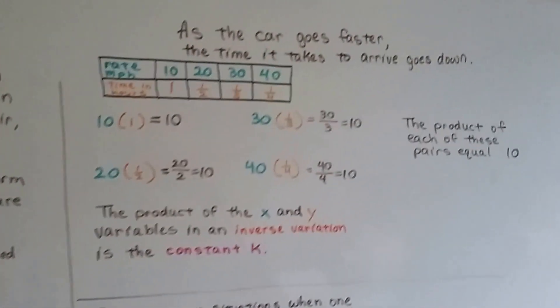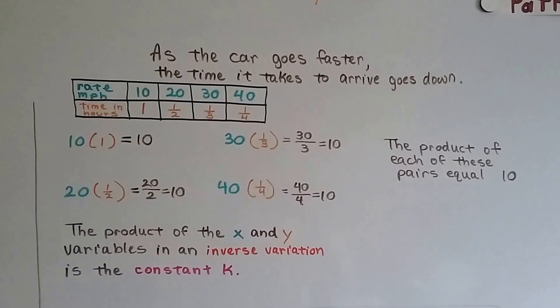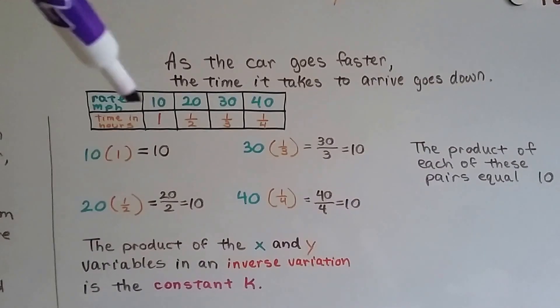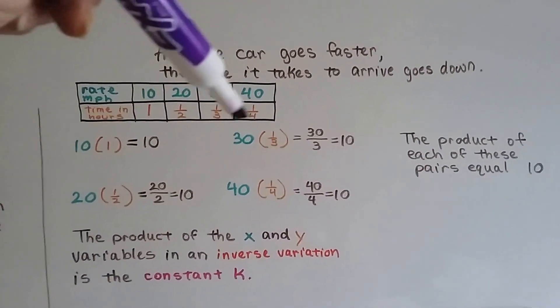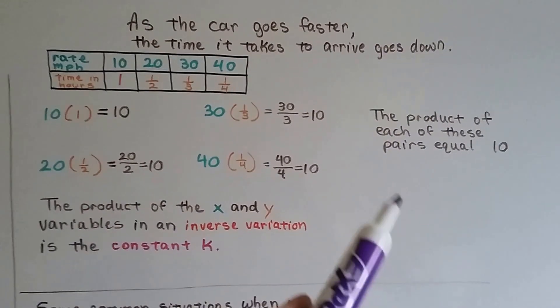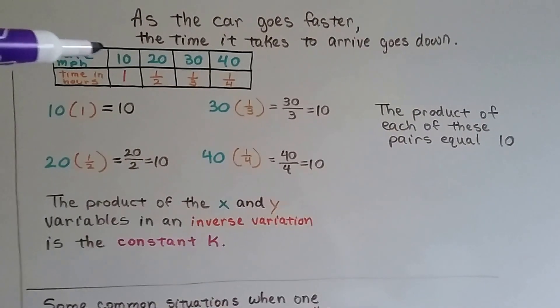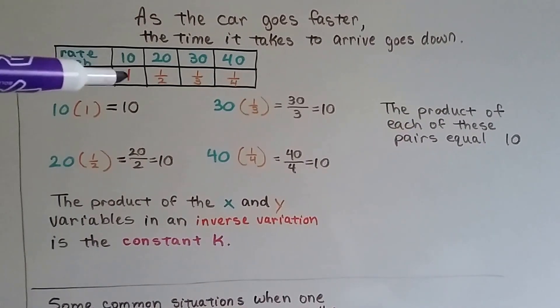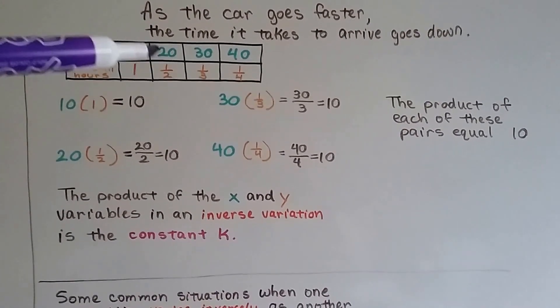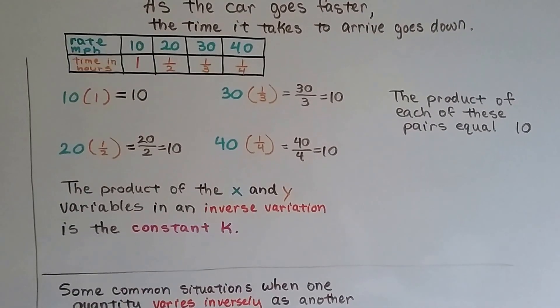So as that car went faster, the time it takes to arrive goes down. The faster the speed, the more this goes up, the time is going down. And each product of these pairs is going to equal 10, because 10 times 1 is 10. The inverse relationship makes this one go up and this one cut in half.